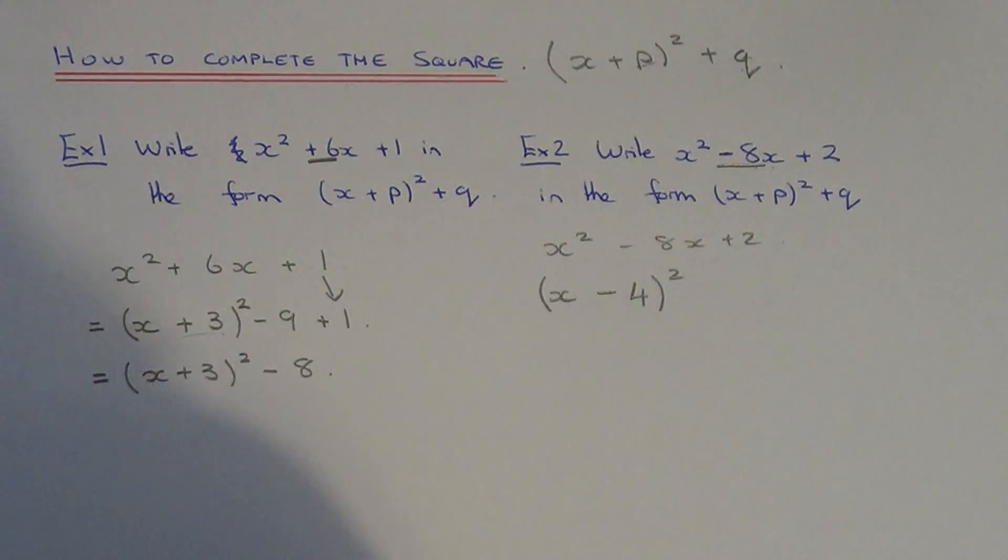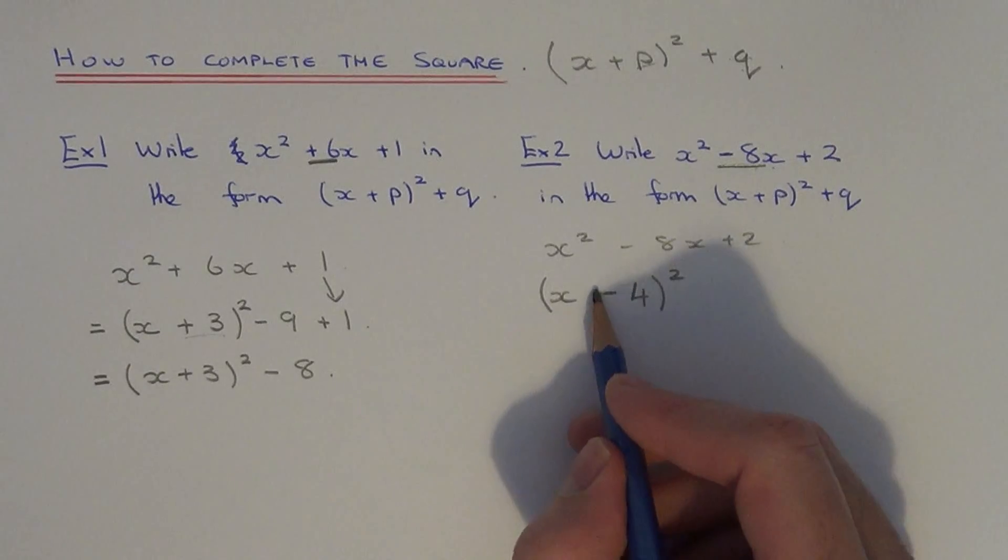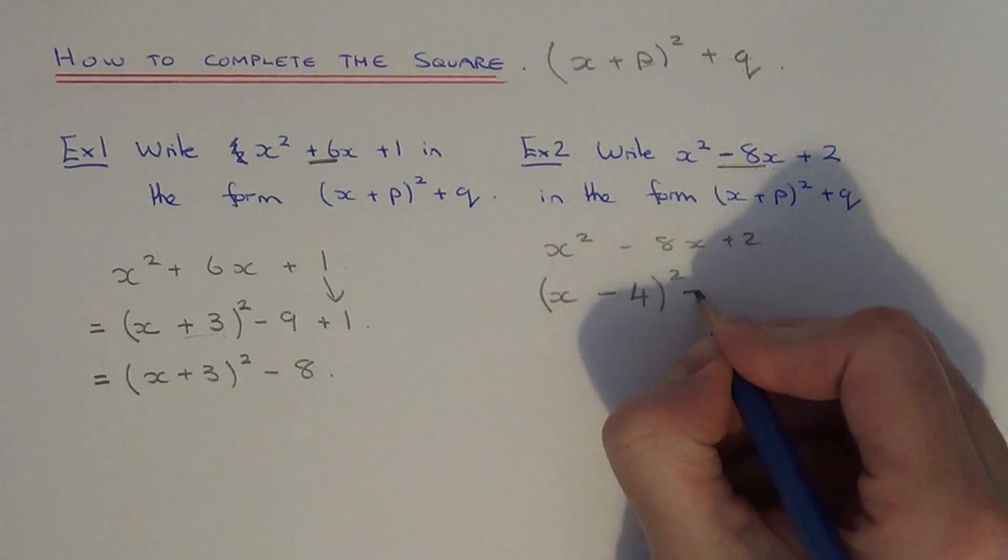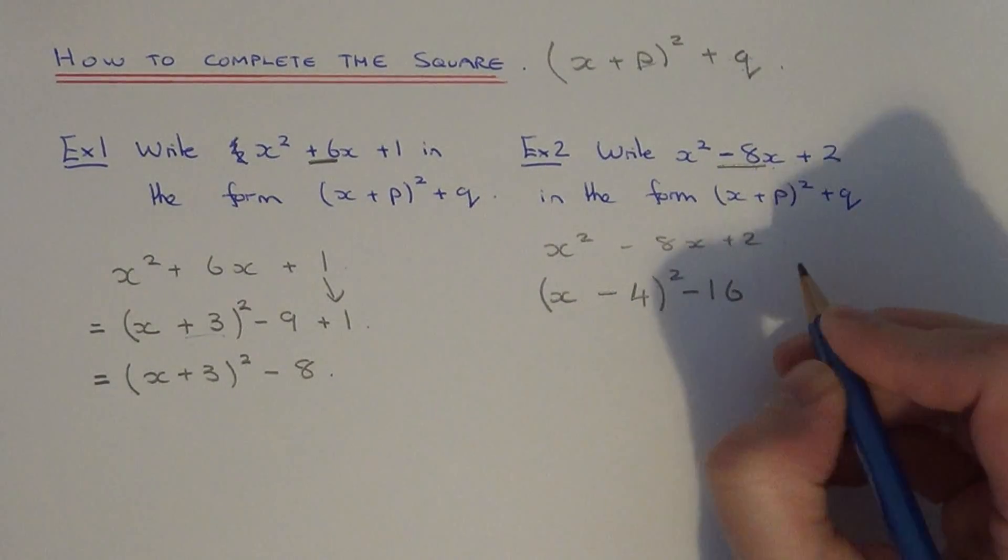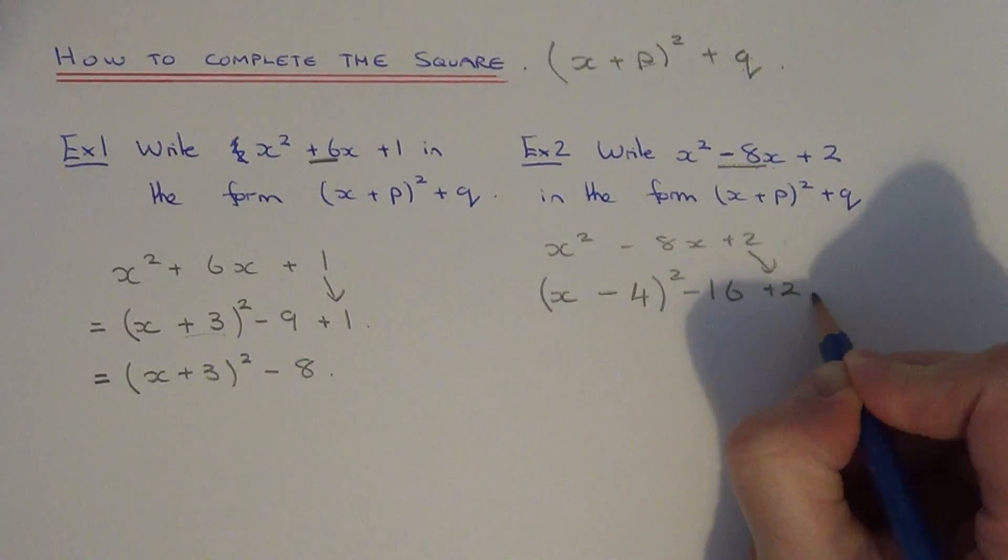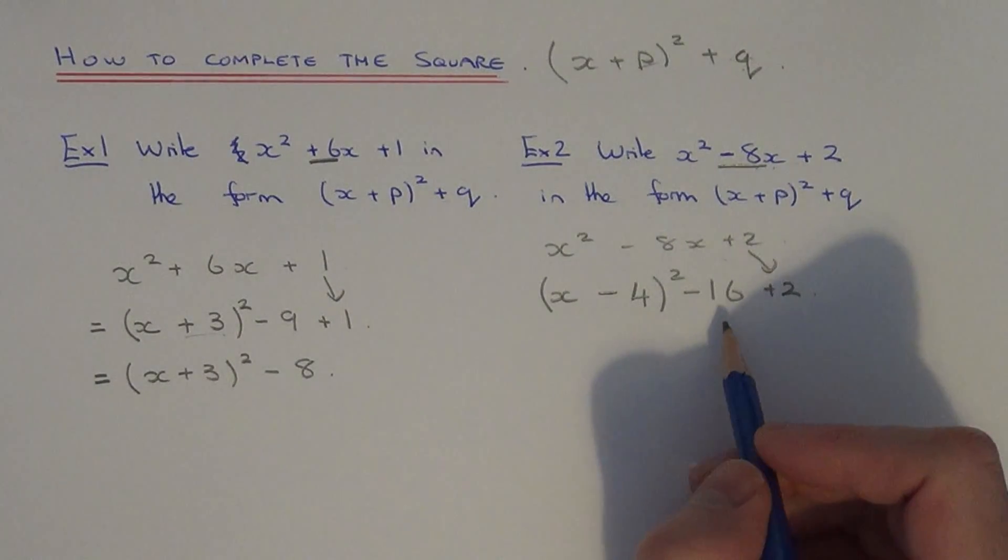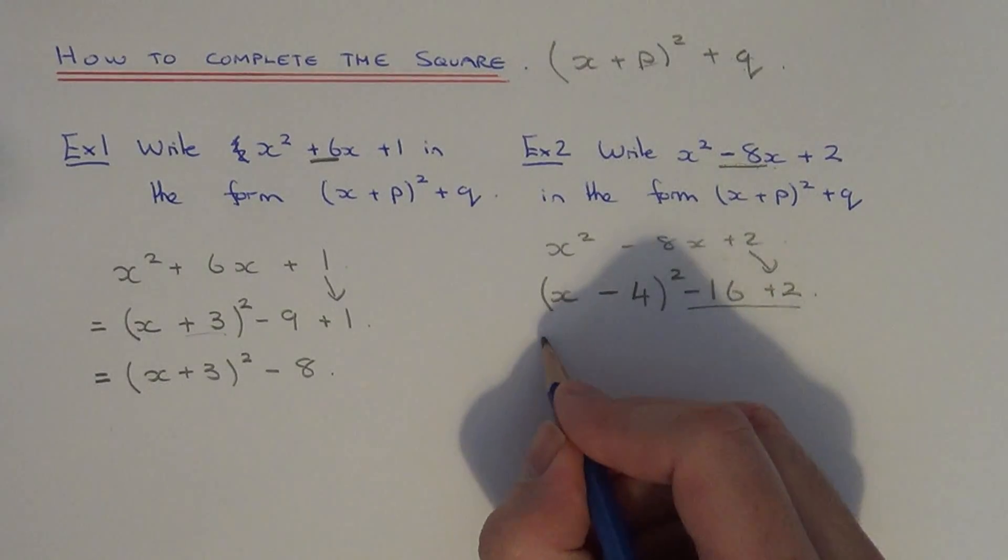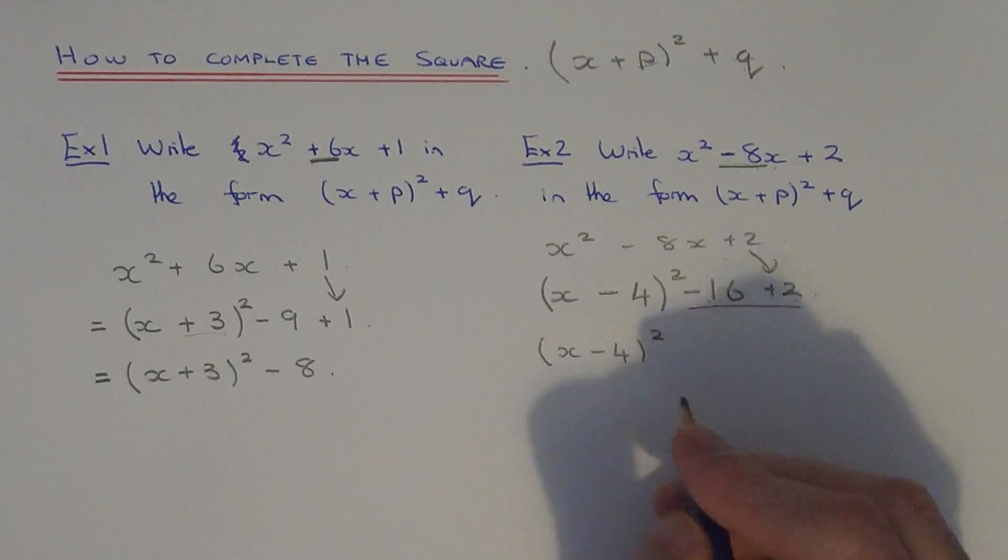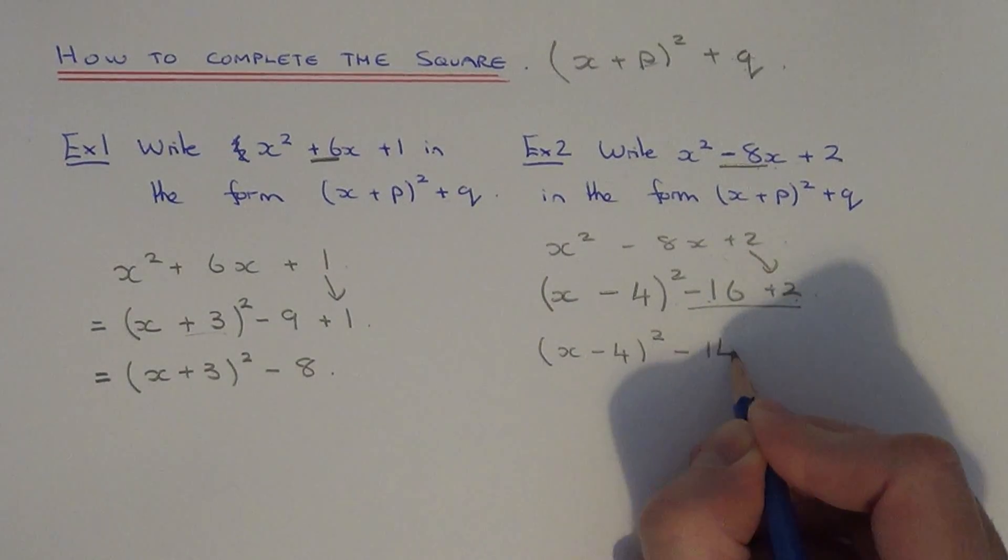We just need to work out q now. To get q, you square this p value that we just found. Minus 4 squared is 16, because minus 4 times minus 4 is plus 16. But then you subtract it off the end, so we need to take away 16. Copy the last number down to the next line. The final thing to do is work out the last sum. You've got minus 16 add 2. This gives minus 14.